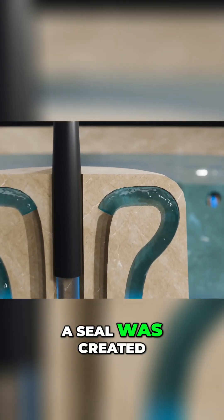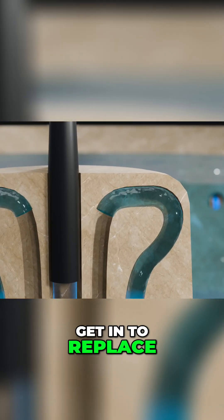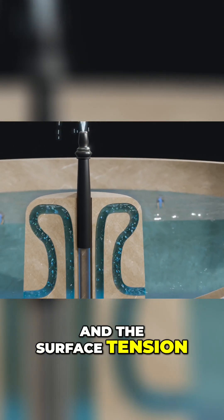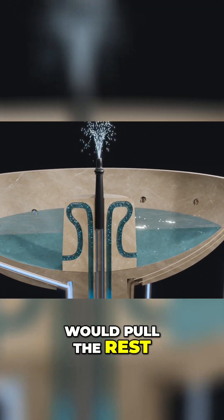At this point, a seal was created and no air could get in to replace the falling water. This activated the siphon and the surface tension of the falling water would pull the rest of the water with it.